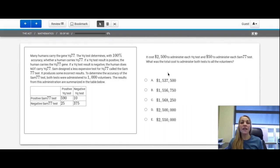The results from this administration are summarized in the table below. Question number 35 says, it costs $2,500 to administer each YQ test and $50 to administer each SAM77 test. What is the total cost to administer both tests to all the volunteers? So we need to know the number of volunteers. We can find that right over here. There are a thousand volunteers. So it costs $2,500 for the YQ test. So I'm going to multiply that by the a thousand volunteers, and I need to add that to it costs $50 for the other test. So 50 times 1000.